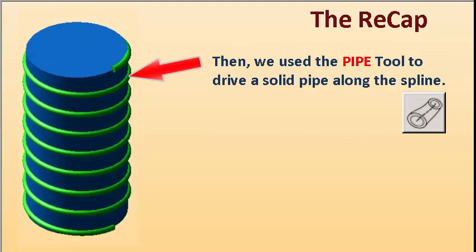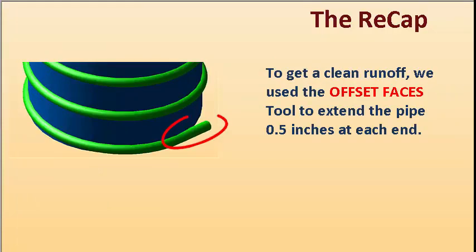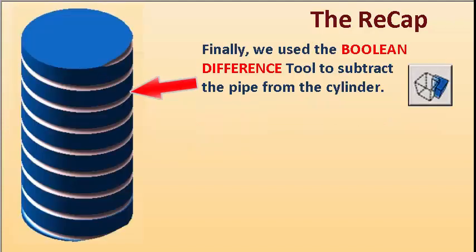Then we used the pipe tool to drive a solid pipe along the spline. To get a clean runoff, we used the offset faces tool to extend the pipe 0.5 inches at each end. And finally, we used the boolean difference tool to subtract the pipe from the cylinder.